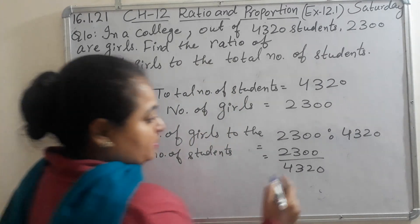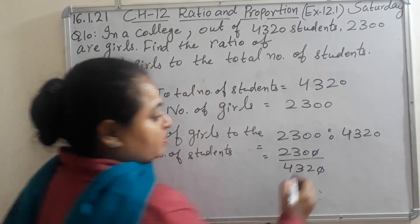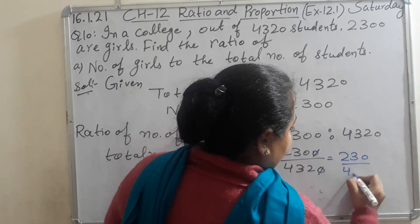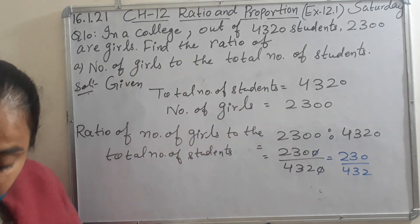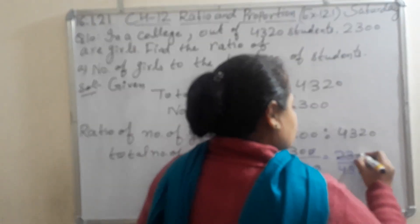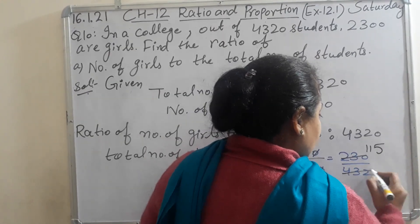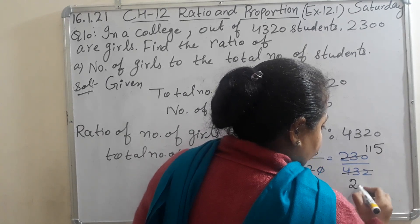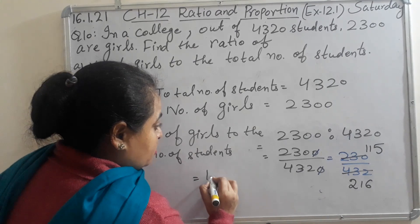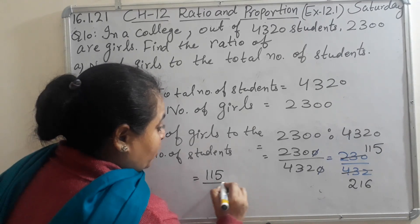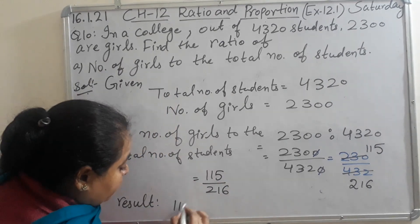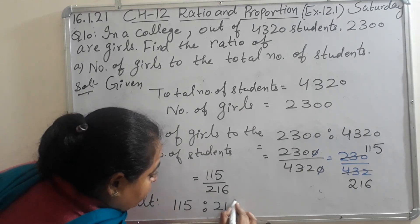Cancellation — cut the zeros: 230 upon 432. Further cancellation is possible in the table of 2. After cancellation, you will get 115 upon 216. Further cancellation is not possible. So, in the result, you will write 115 ratio 216.